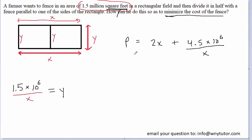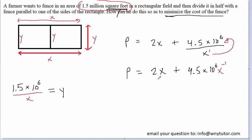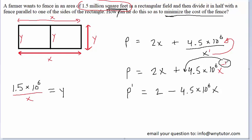In order to find the minimum value of the perimeter and hence the minimum cost, we need to compute the derivative of this equation. Before we do that, it's useful to move the x in the denominator to the numerator — the exponent changes its sign, so x to the positive 1 becomes x to the negative 1. We can now compute the derivative p prime. The derivative of 2x is 2. We pull the exponent negative 1 down in front, giving us a minus sign, times 4.5 times 10 to the 6, and subtracting 1 from the exponent gives us x to the negative 2.